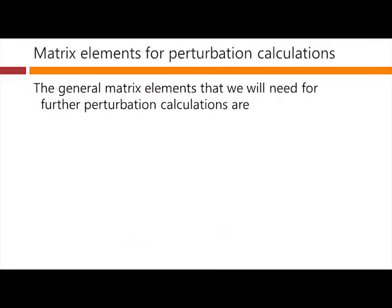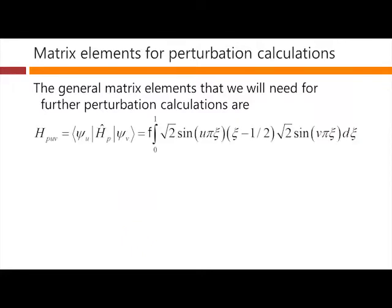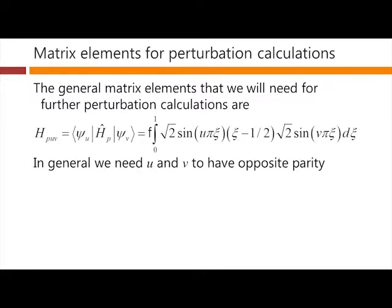The general matrix elements we're going to need to go further with our perturbation calculations are these matrix elements here. Sometimes we write them down with this shorthand. Actually, for these calculations here, we'll mostly write them out completely in this bracket form. So these are the integrals. And in general, to get any non-zero result out of this integral, we need these integers u and v in here to have opposite parity.